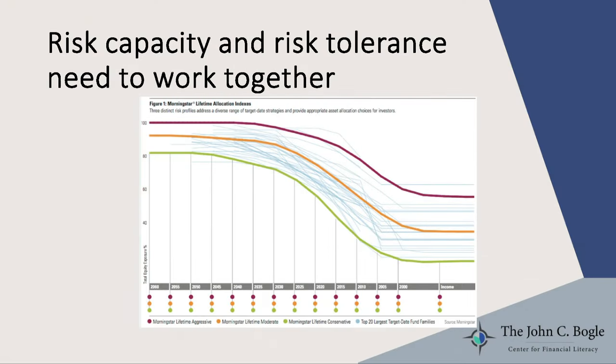Risk tolerance should sit side by side with risk capacity. I would say put risk capacity in the front seat and risk tolerance in the back seat, but both are important concepts that work together. At Morningstar we've got different glide paths and different asset allocations for people at different life stages — a conservative, moderate, and aggressive version. They're all trending in the same direction, but the more conservative versions are a little more heavy on fixed income and cash investments. Let's run through a few case studies to illustrate how these two things work together.